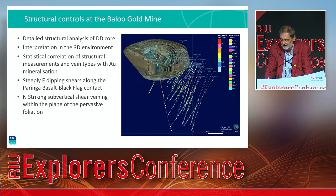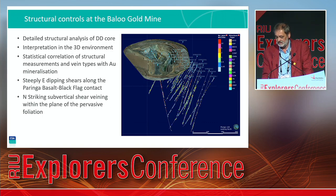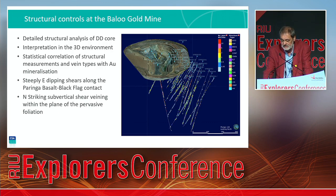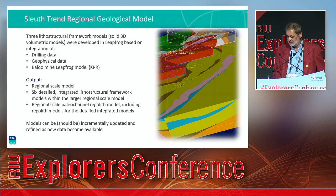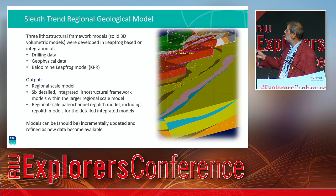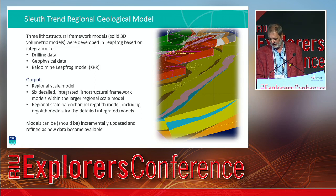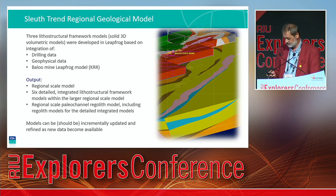For the Baloo Gold Mine, Steve did a fair bit of re-logging of the diamond core, interpreted in the 3D environment, and used statistical correlations of structural measurements and vein types with gold mineralization. The conclusion was that steeply east-dipping shears along the Black Flag–Paringa contact are critical for mineralization, and north-striking sub-vertical shear veins host most of the mineralization. The 3D model was initially a regional-scale model, into which we nested six smaller-scale models that allowed more detail and aided interpretation at the local scale.